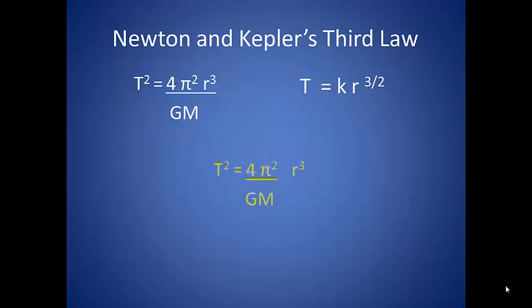We can pull out the 4π² over the gravitational constant and the mass of the sun. We can then convert that into the constant of proportionality that is needed to fulfill Kepler's equation.